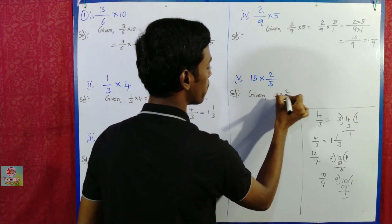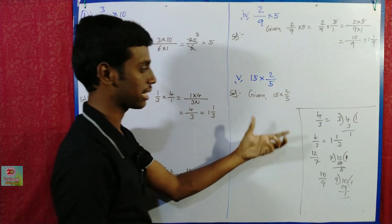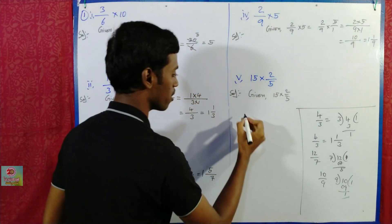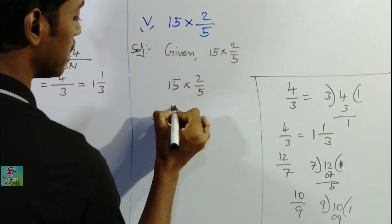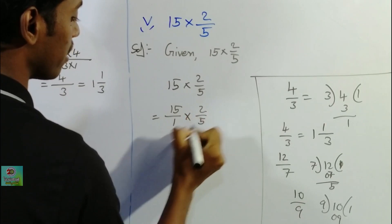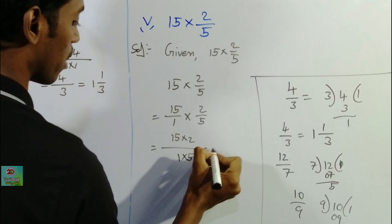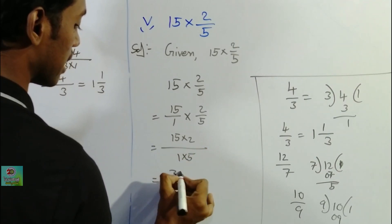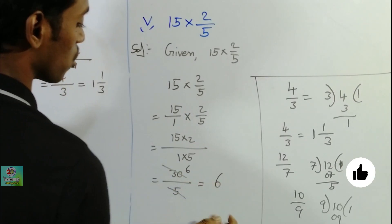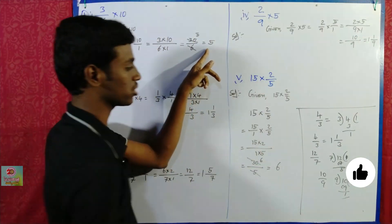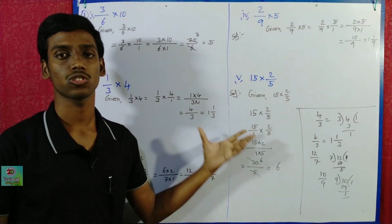Given: 15 into 2 by 5. The next step is 15 into 2 over 1 into 5. 15 into 2 is 30, and 1 into 5 is 5. So 30 by 5 — 5 goes 6 times. So the answer is 6, which is the same as a whole number mixed fraction. Thank you so much.